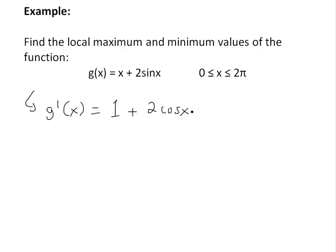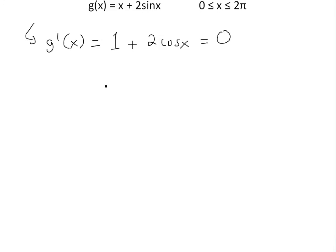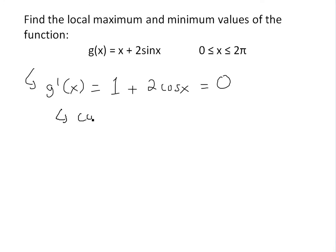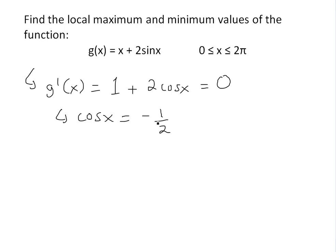Now we need to find critical numbers, so we set this equal to zero. This is a continuous function — the trig part is continuous and the constant is just a constant — so the critical numbers are only when the derivative is zero, because it's going to exist everywhere. We set it equal to zero and solve for x. In this case, cos x is going to be equal to negative one over two. So we need to find the x values where cos of x equals negative one over two, because then we'll have a derivative of zero.